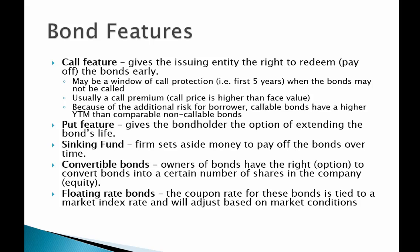There's typically a call premium, so the call price is going to be higher than the face value. For some bonds, that might be a sliding scale — the longer the bond is outstanding or the closer it gets to maturity, the call premium might diminish. For example, if called after five years, you might receive $1,050 for every bond instead of the $1,000 face value.